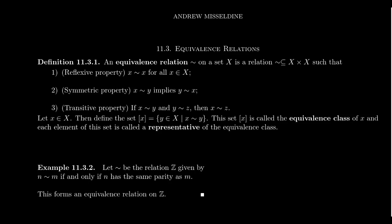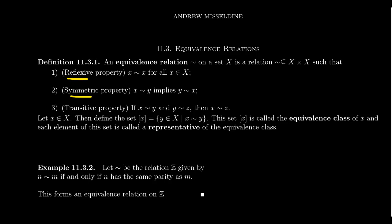Much like a partial order, an equivalence relation satisfies three axioms. The first axiom is the reflexive property, so every element is related to itself: for all x in X, we have x is related to x. We also have the symmetric property. This is where we disagree with the partial order. Partial orders are reflexive, anti-symmetric, and transitive. For an equivalence relation, instead, we take it to be reflexive, symmetric, and transitive.